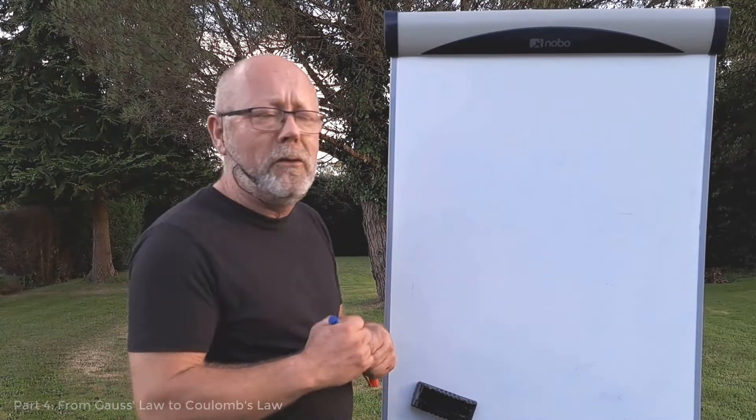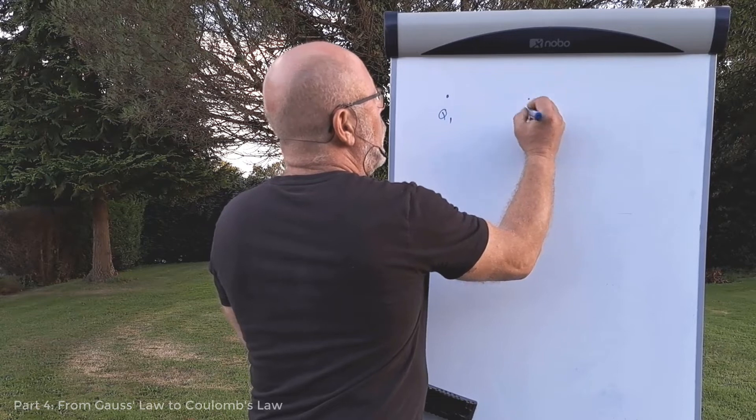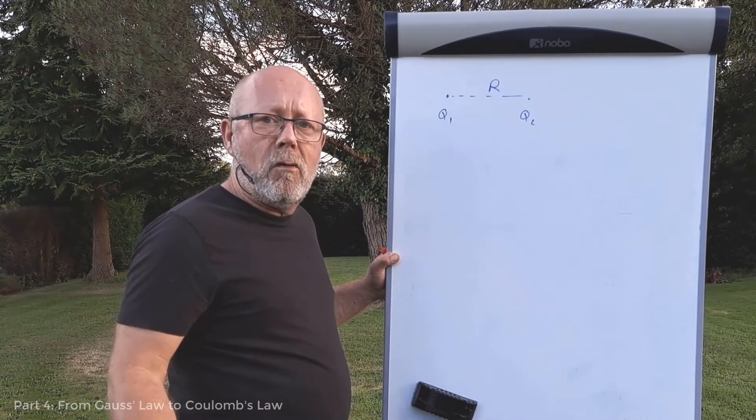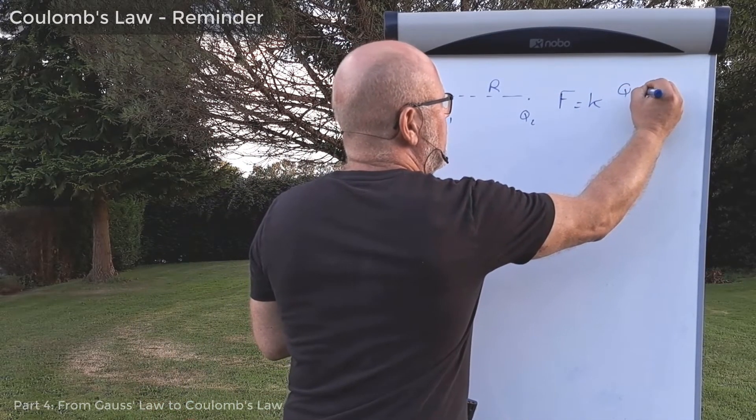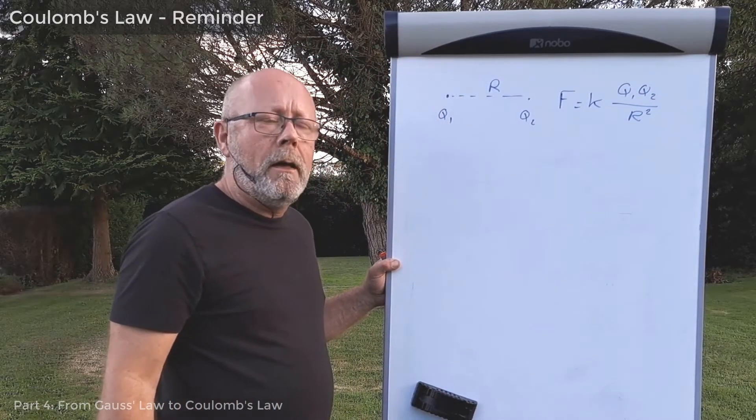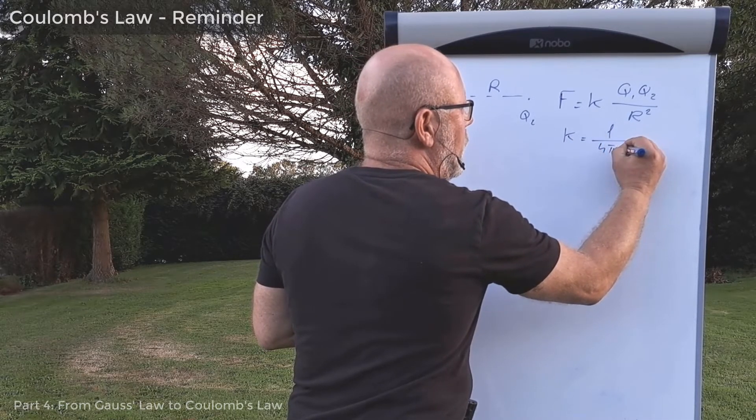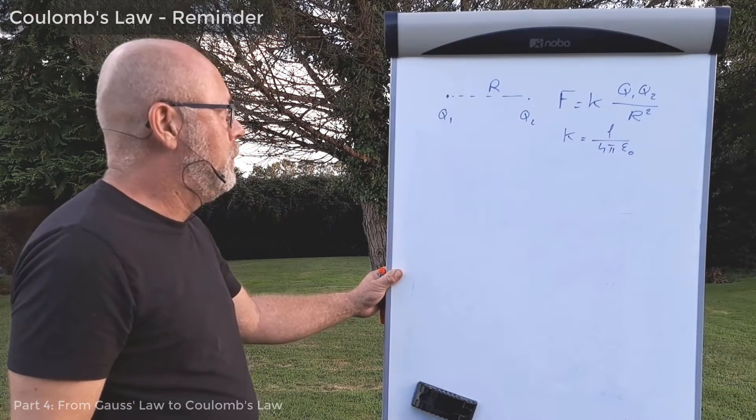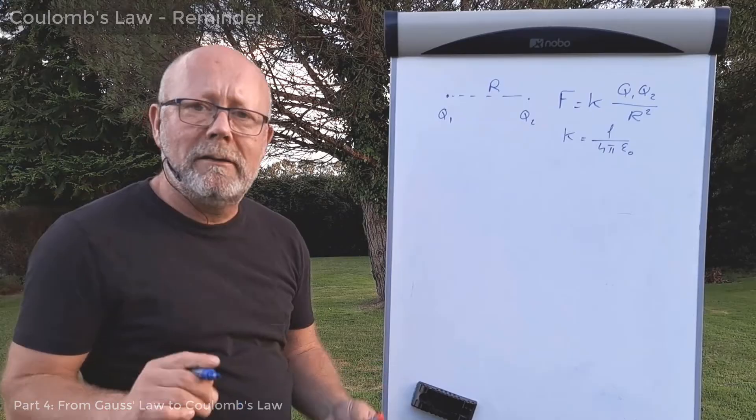All right, so I'll remind you of what Coulomb's law is. If you have two charges Q1 and Q2 separated by a distance r, there'll be a force of electrical origin between them, which is proportional to the product of the charges and inversely proportional to the square of the distance between them. K, the Coulomb constant, will be 1 over 4πε₀, where ε₀ is the permittivity of vacuum. Okay, I want to prove this with Gauss's law, so I'm going to put myself in context.